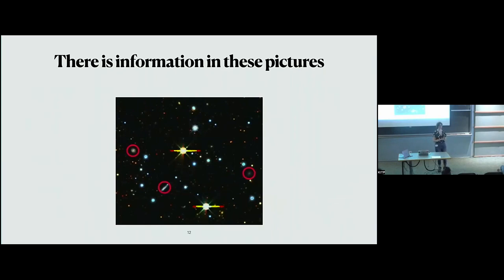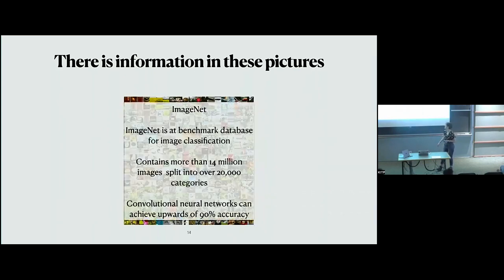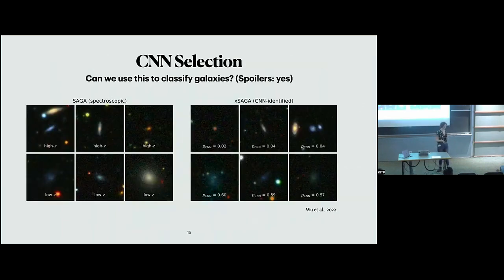As John kind of spoiled, there's information in these images — we can do this by eye. As soon as you can say something about an image by eye, everyone here who's done any machine learning is thinking: images, we know how to do them. This is ImageNet, a benchmark image classification dataset containing over 14 million images split into 20,000 categories. Modern convolutional neural network techniques can achieve incredibly high accuracy on this. So if we can do it with this crazy large dataset, we can probably do it with dwarf galaxies. And yes, we can — this is the same picture John showed, showing a CNN predicting low versus high redshift galaxies.